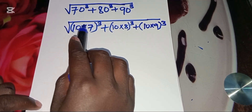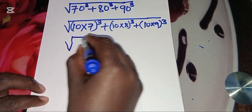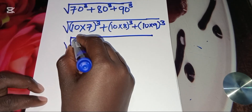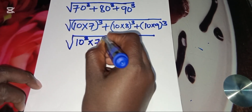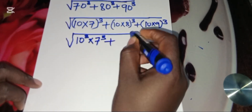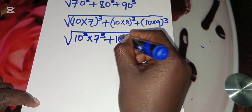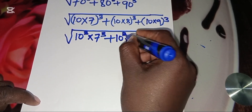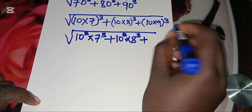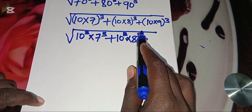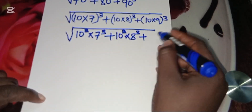Remember, 10 times 7 raised to power 3 is the same as (10×7)³. We can express this as 10 cubed multiplied by 7 cubed. Similarly, 10 times 8 raised to power 3 becomes 10 cubed multiplied by 8 cubed, because 10 cubed times 8 cubed equals (10 times 8) raised to power 3.